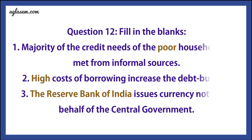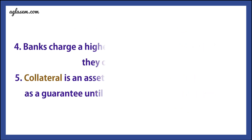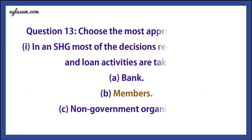Question 12: Fill in the blanks. First: Majority of the credit needs of blank households are met from informal sources — answer: poor. Second: Blank cost of borrowing increases the debt burden — answer: high. Third: Blank issues currency notes on behalf of the central government — answer: the Reserve Bank of India. Fourth: Banks charge a higher interest rate on loans than what they offer on blank — answer: deposits. Fifth: Blank is an asset that the borrower owns and uses as a guarantee until the loan is repaid to the lender — answer: collateral/security.